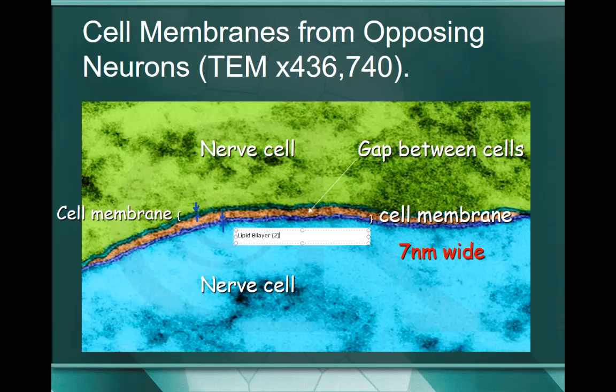This is what's known as a lipid bilayer - bi meaning that there are two of them. You'll also notice there's a gap in between. When we look at this gap, this is where a lot of the communication occurs between cells. The cells you're looking at here are nerve cells, and this in particular is a really important place where you have communication signals - mostly chemicals and proteins being sent back and forth between the two different cells.